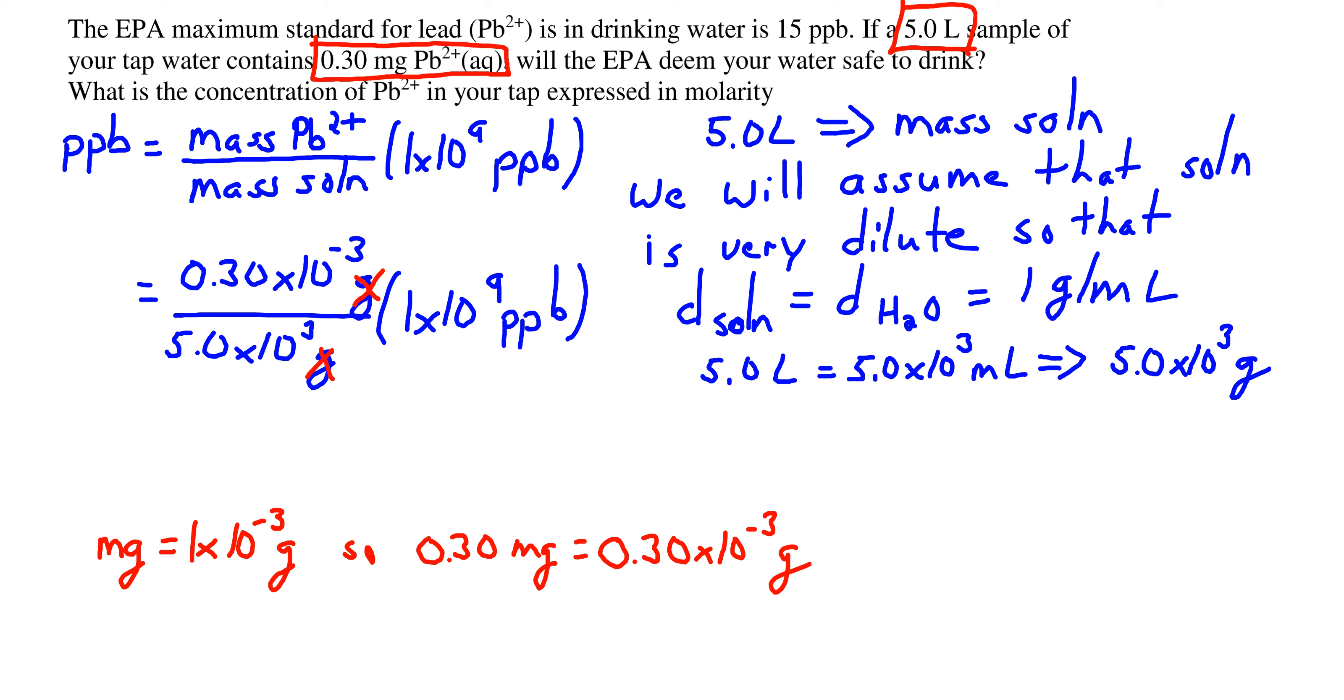So we have our problem set out and we just chunk out our values on the calculator. Our final result is 60 parts per billion. This does exceed the EPA limit, so this water according to the EPA would not be safe to drink.